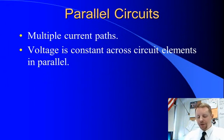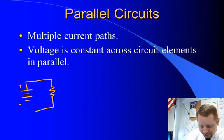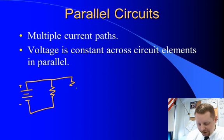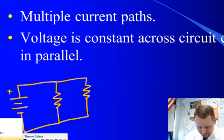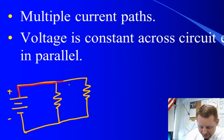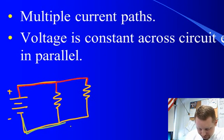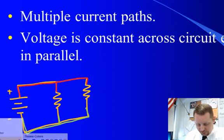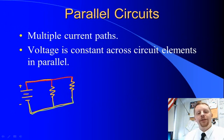A parallel circuit has multiple current paths. That means the voltage is constant across the circuit elements that are in parallel. An example of a parallel circuit might look something like this: we have a source of potential difference, a resistor, a closed loop to make a complete circuit, and maybe another resistor — and those two resistors are in parallel. Because the potential anywhere in a wire is the same, the potential anywhere on one side of the resistors is the same, and on the other side as well. So since you have the same potential on either side of the resistors, we must have the same potential drop across each resistor — the circuit elements in parallel have a constant voltage or potential difference across them.